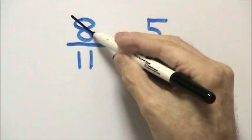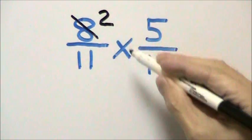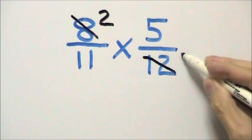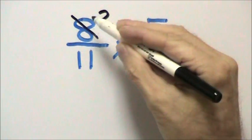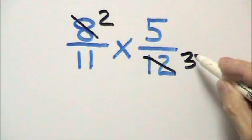In this case, that factor is 4, so we divide both sides by 4. 8 divided by 4 is 2, 12 divided by 4 is 3.